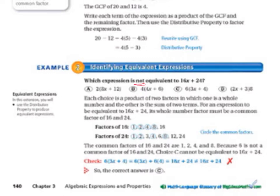So, it says each choice is a product of two factors in which one is a whole number and the other is the sum of two terms. So, we see that we've got a whole number on the outside of the parentheses and then two things on the inside of the parentheses. So, that's all that that sentence is saying.